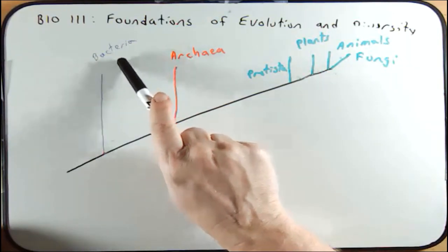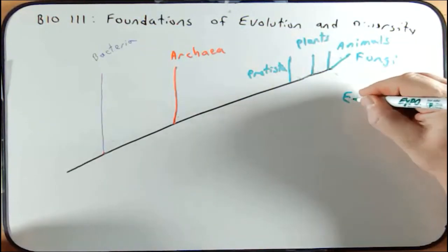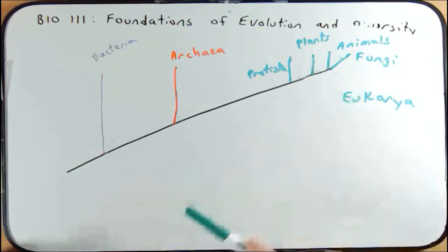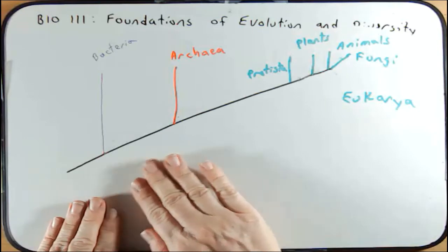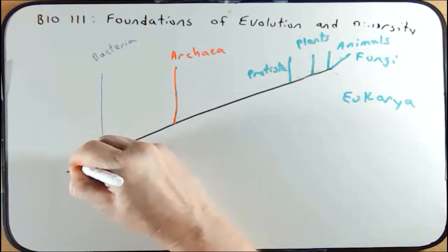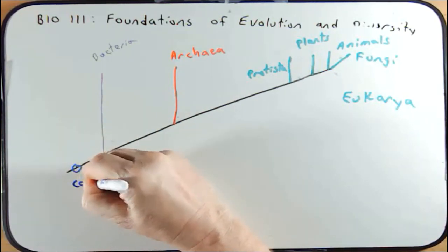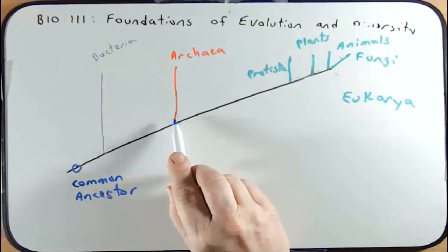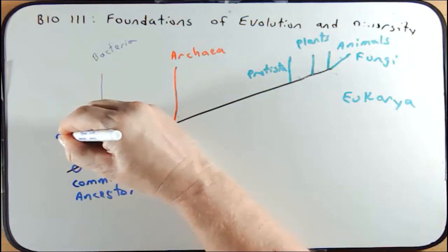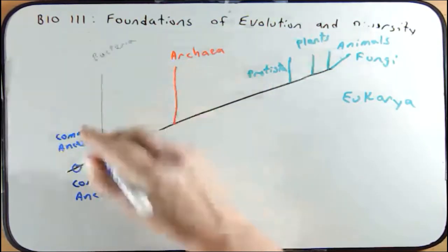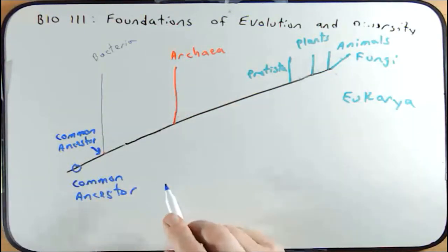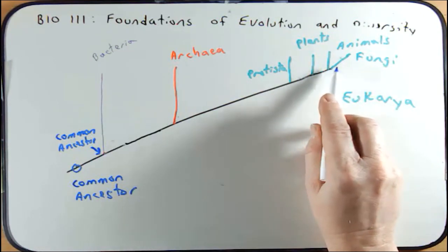As we go through this semester, we're going to talk about the three domains of life — bacteria, archaea, and eukarya — and then we'll talk about the kingdoms within eukarya. All these forms of life on this phylogenetic tree didn't just magically appear on Earth. It all began with some common ancestor that gave rise to bacteria, archaea, and eukarya. These branch points represent the common ancestor to all bacteria, to all archaea, to all protista, to plants, to animals, and fungi.